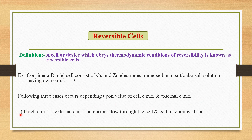The first case: if cell EMF is equal to the external EMF, no current flows through the cell and the cell reaction is absent. If the acting EMF is exactly equal to the external EMF, there is no potential difference, so current is absent and the cell reaction is absent.